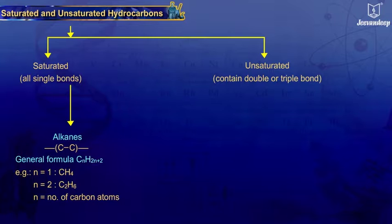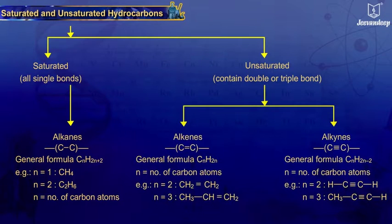A hydrocarbon that contains carbon-carbon double bonds (the alkenes) or triple bonds (the alkynes) are called unsaturated hydrocarbons.